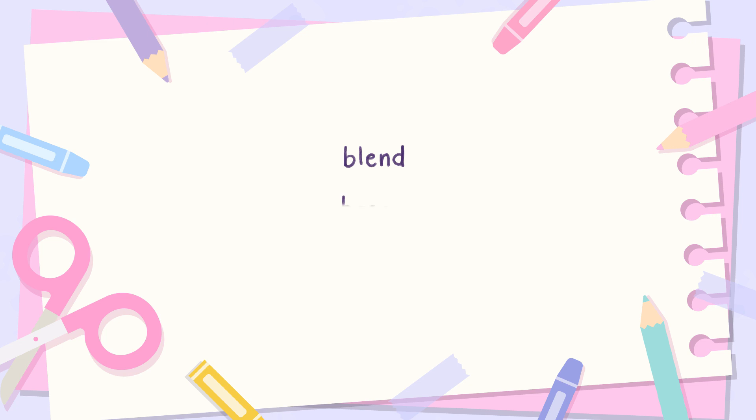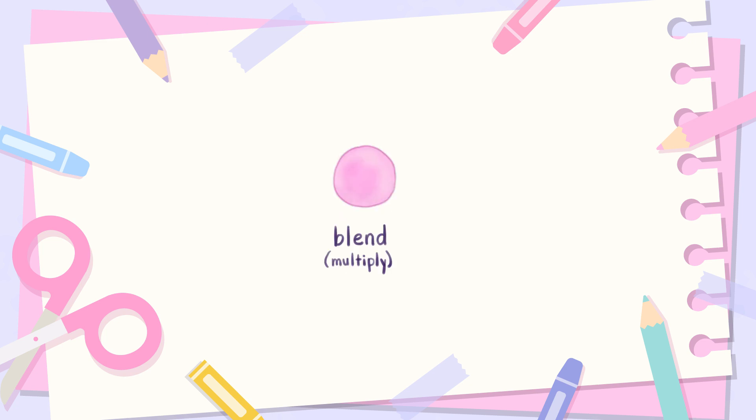Really quickly, there's going to be three colors I'll talk about: the blend color, the base color, and the result color. The blend color is just the color of the layer with the blend mode, and the base color is the color underneath it. The result color is what you get from combining them.